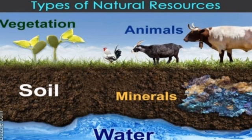Any natural substance that humans use can be considered a natural resource. We get many substances from nature and they satisfy a variety of our daily needs. Soil, stone, minerals, air, water, plants, and animals on the earth are all various kinds of natural resources.